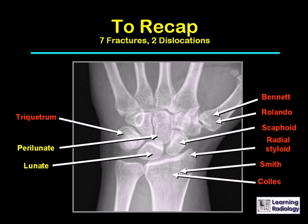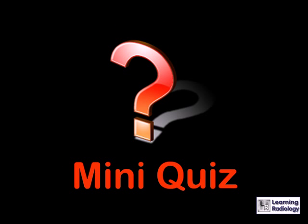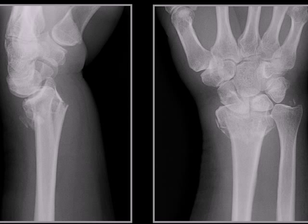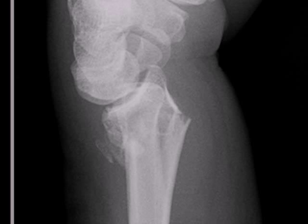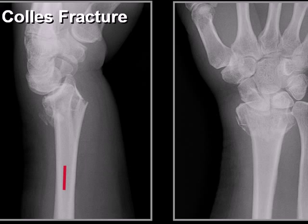To recap, we've discussed seven fractures and two dislocations around the wrist: triquetral, Bennett, Rolando, scaphoid, radial styloid, Smith, and Colles' fractures, and perilunate and lunate dislocations. For the mini-quiz: on a frontal and lateral wrist of a patient who fell on their outstretched hand, there is a fracture of the distal radius with dorsal angulation — classical for a Colles' fracture.